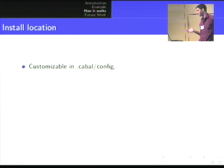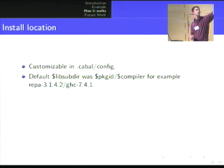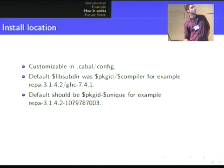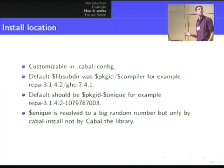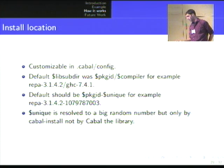Now, how is this implemented? The install location is customizable in your config file in Cabal. Previously, the location where the library got installed was package-id slash compiler — for example, repa version GHC 7.4. We changed this to package-id minus a new variable $unique, which is resolved during configuration to a big random integer to make this instance actually unique. But only cabal-install does this — the normal Cabal library does not know about this new variable. So if you install stuff with Cabal directly, not with cabal-install, you might still get problems with instances overwriting existing instances.